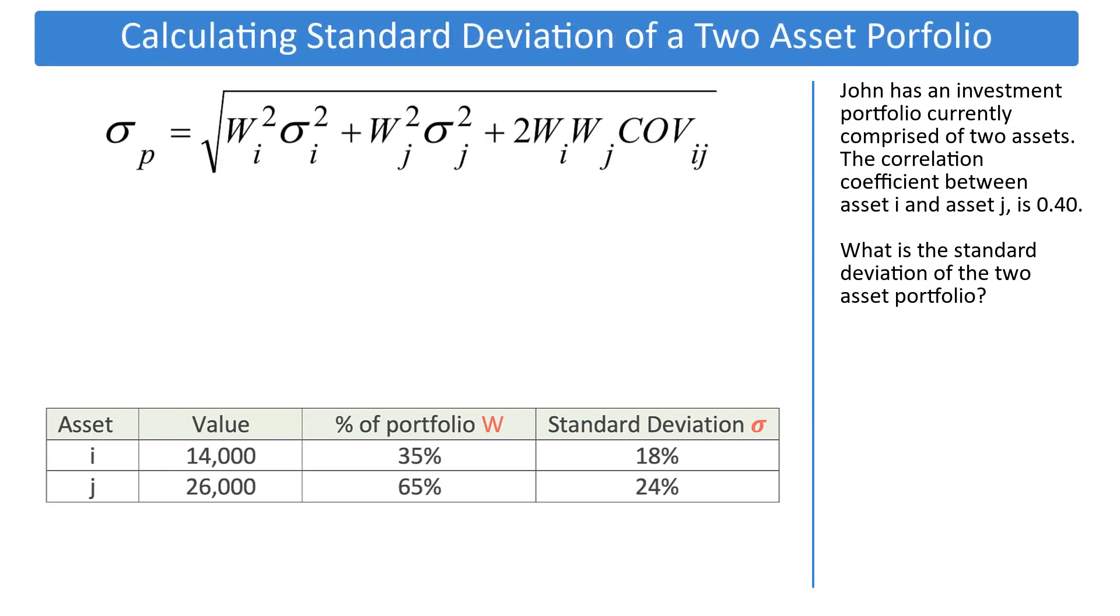The formula for standard deviation for two assets can be broken down into three pieces being added together. Two pieces are the percentage of the asset multiplied by the variance, asset I and asset J. The third piece is twice the product of the respective percentages multiplied by the covariance.